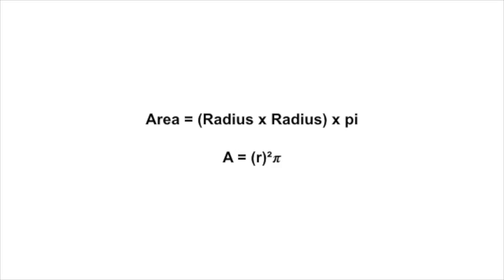So now we know what the radius, the diameter, and the circumference are, and we know what pi is, but we need to know the area. So here are a few formulas — write these down if you don't have them in front of you. The area of a circle is pi r squared. r is the radius. So first, square the radius — multiply it by itself — then multiply that by 3.14, or pi, and that's it. If you know the radius, you can easily find the area of that circle.